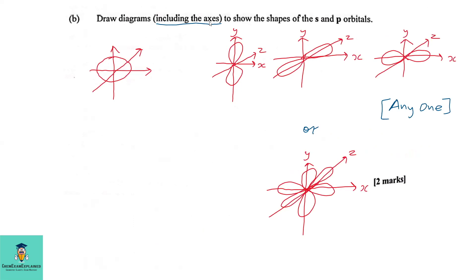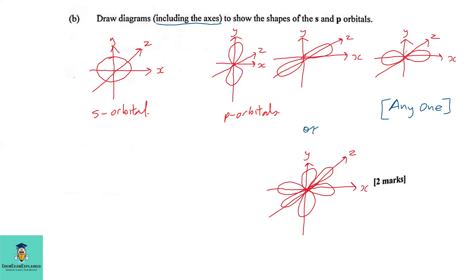Question 1b asks us to draw diagrams including axes to show the s and p orbitals. The s orbital is spherical, and we include the x, y, and z axes. The p orbital has a dumbbell shape, and the three p orbitals are degenerate — they are all at the same energy level. What differs between them is their orientation, but they are the same shape and size.